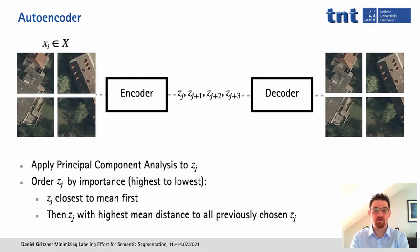Then we ordered our latent representations by importance from highest to lowest. First, we picked the zj closest to the mean of all zj's — the zj that best represents the probability distribution of all zj's. Then we added those zj's with the highest mean distance to all previously chosen zj's, repeating this over and over. This means we first captured the most representative example and then added more and more diversity by picking distant zj's. We could then iterate over this ordered list of zj's and pick those xi's that correspond to each zj until we have the desired number m of unique input images.